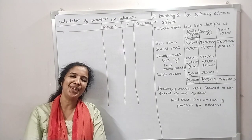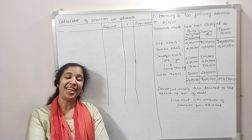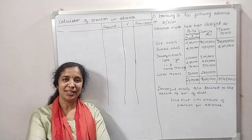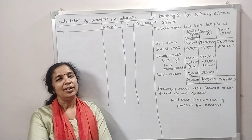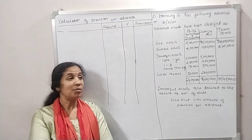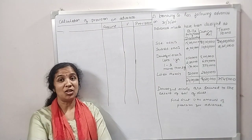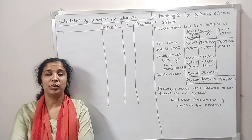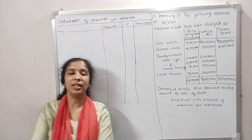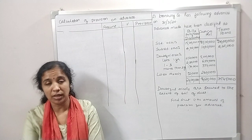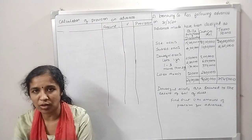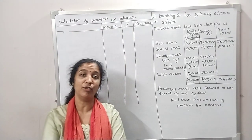We have learned about advances and we will compare the portions. If we have a bank account or a file account, we need to prepare the format.